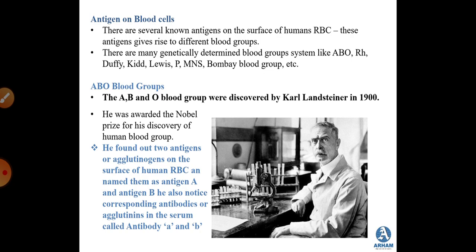There is also the P blood group and the MNS blood group. The MNS antigen system is based on two genes — glycophorin A and glycophorin B — on chromosome 4. The Bombay blood group is very rare; it was first found in Bombay and is also found in the Indian subcontinent (Pakistan, Bangladesh) and the Middle East (Iran). The common blood groups are ABO and Rh.